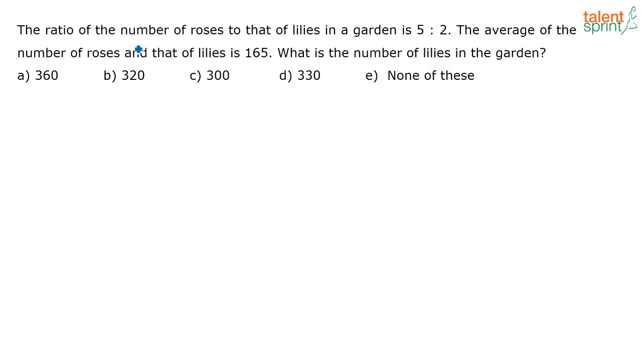The ratio of the number of roses to that of lilies in a garden is 5 is to 2. So 5x roses are there in the garden and 2x lilies are there in the garden. I am assuming this. So totally 5x roses and 2x lilies are there, or I can say totally there are 7x flowers in the garden.